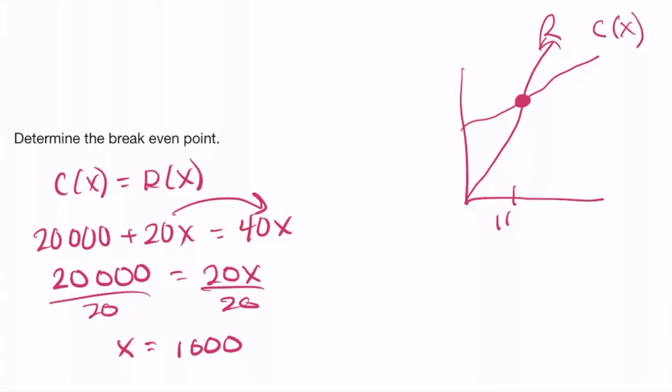So here on the graph, 1,000. We need to find the Y value. So plug in X. You can plug it into either the cost or the revenue. The revenue is easier. So R of 1,000 equals 40X, 1,000. We get 40,000. So this point up here is 40,000.